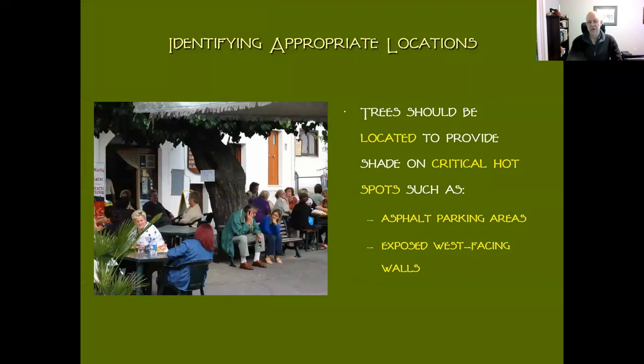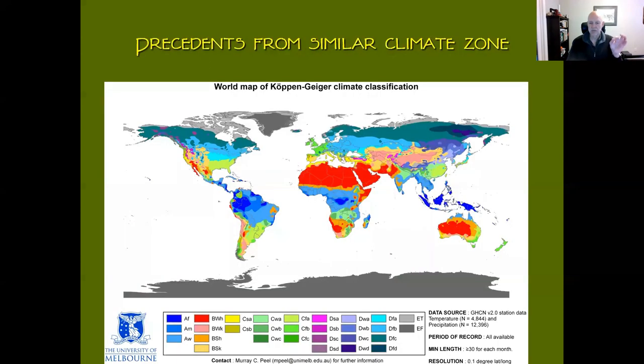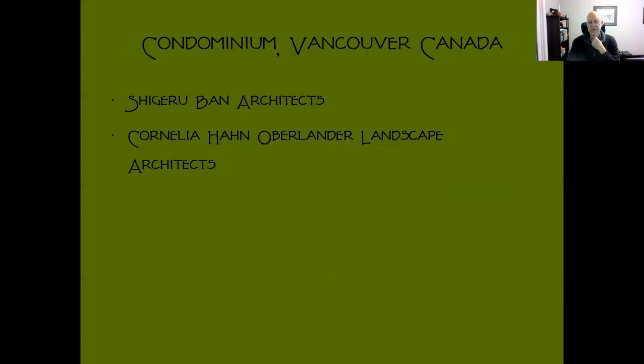In terms of location, we should locate them in critical hot spots—asphalt parking lots, exposed west-facing walls. We should find these hot spots in the city and plant our trees to make those cooler.